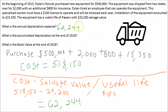Next: what is the accumulated depreciation at the end of 2018? Accumulated depreciation is simply the sum of depreciation expenses — you add them up each year. The equipment was purchased at the beginning of 2015, so by the end of 2018 that's four full years: 2015, 2016, 2017, and 2018. Four years times $62,244 equals accumulated depreciation of $248,976.